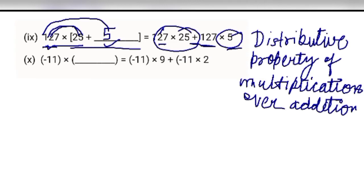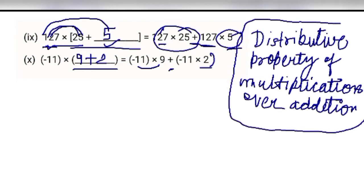Now the tenth part: minus 11 multiply — we have minus 11 multiply 9 plus minus 11 multiply 2. This number is multiplying minus 11 by 9 and there is a plus sign, then minus 11 multiplied by 2. Again this is distributive property of multiplication over addition.